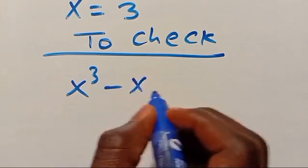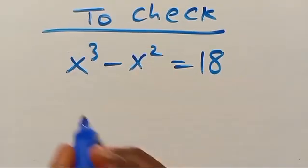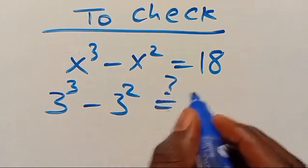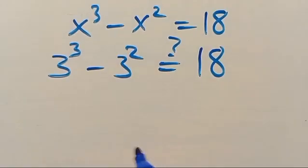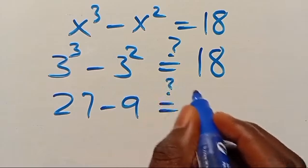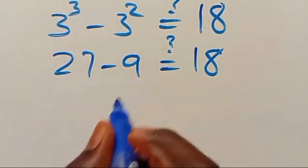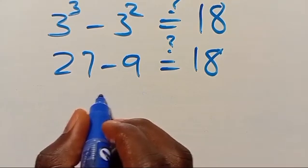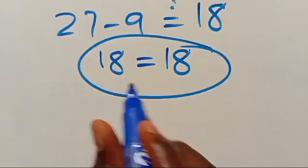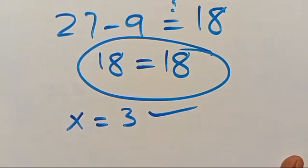Let's verify: we have x to the power of 3 minus x squared equals 18. When x equals 3, we get 3 to the power of 3 minus 3 to the power of 2, which gives 27 minus 9, and that gives us 18. So 27 minus 9 equals 18, and this equals 18. Since the left-hand side equals the right-hand side, x equals 3 satisfies the given problem.